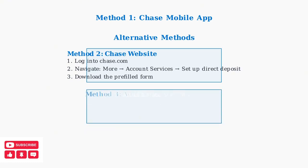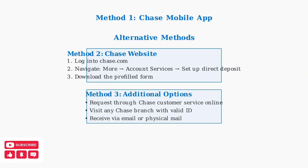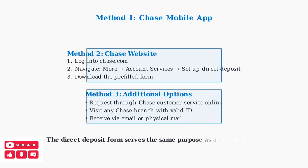Additional options include requesting a voided check through Chase customer service online or visiting any Chase branch with valid identification. These methods may take a few business days for delivery.